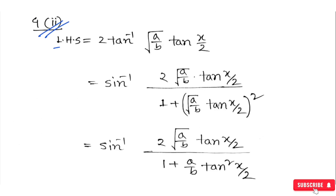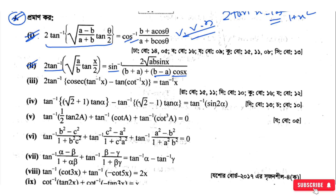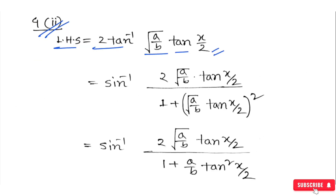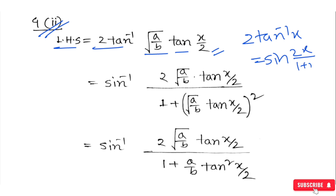Assalamualaikum. On the left-hand side we have 2 tan⁻¹(√(a/b) · tan(x)). We can do this proof using sin⁻¹, applying the formula 2 tan⁻¹(x) = sin⁻¹(2x/(1+x²)), where x will be the whole substituted expression.